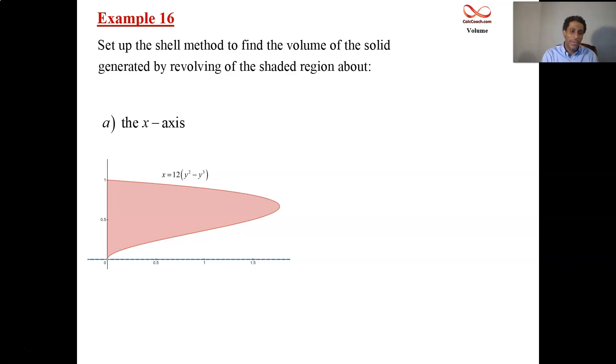The function is x equals 12 times the quantity of y squared minus y cubed. So you draw the region, but this may be drawn for you. Make sure you dash the axis of rotation. When you're doing shell, you're doing it parallel to the axis of rotation. So draw on a rectangle that's parallel. That will generate your shell.